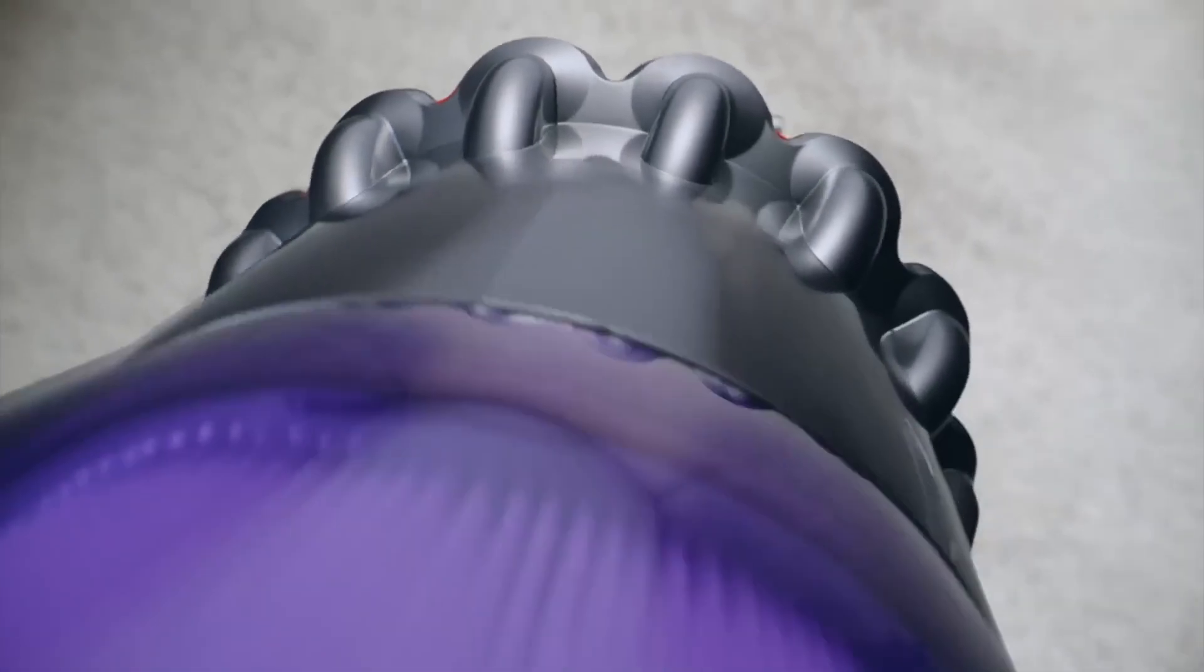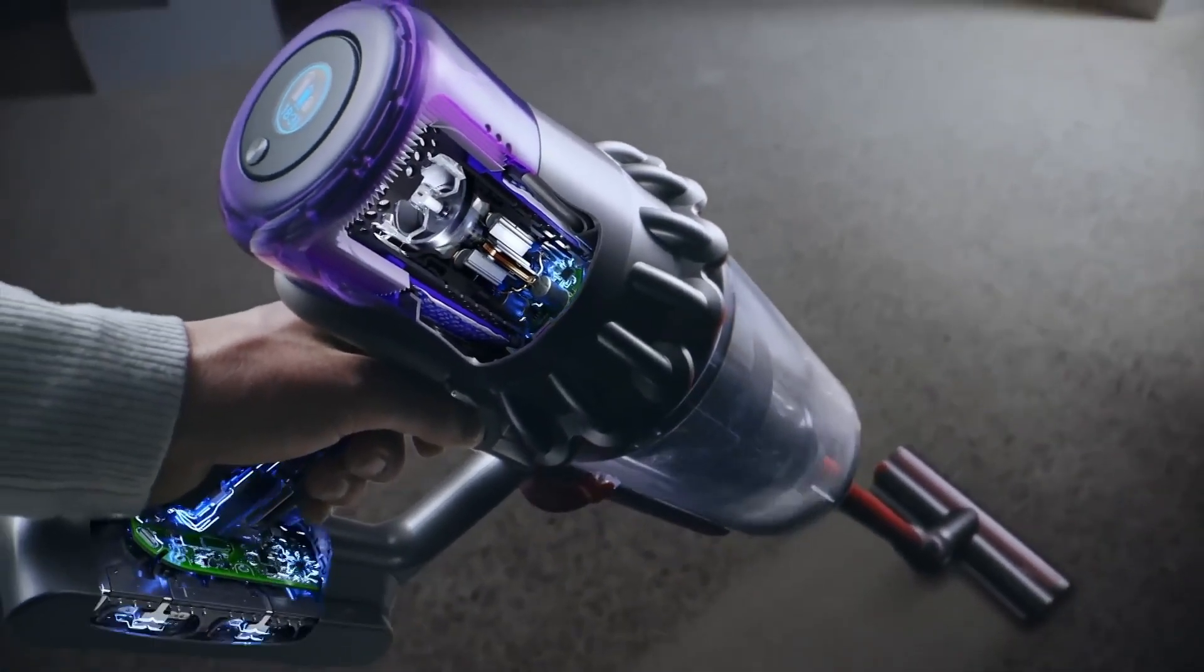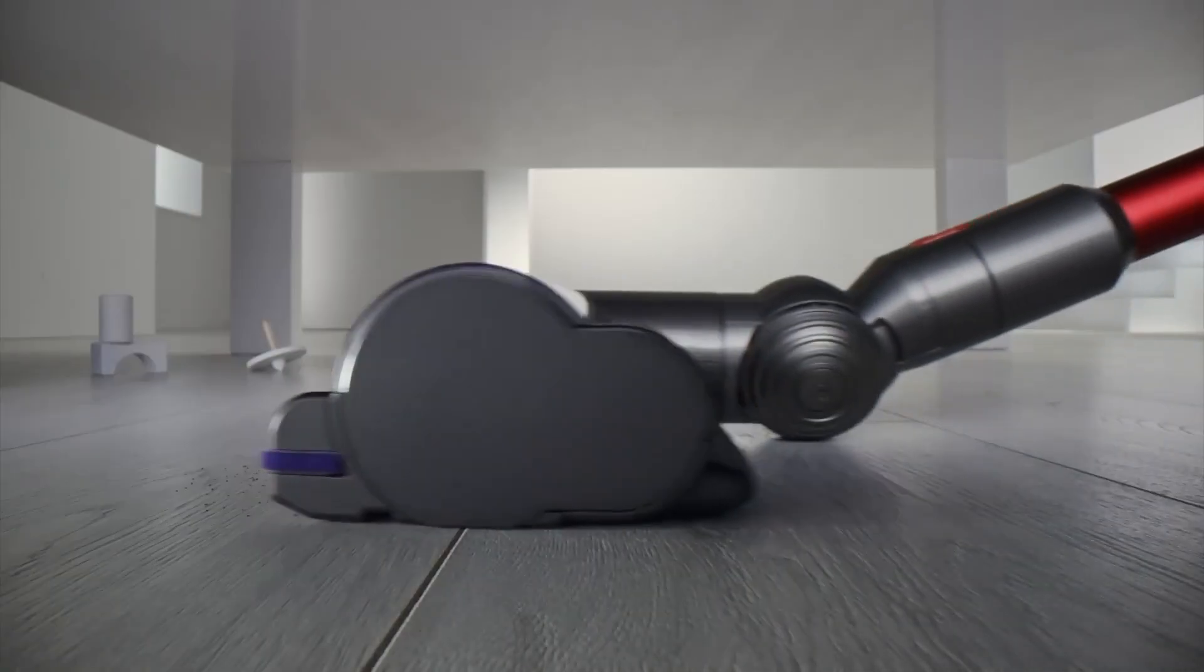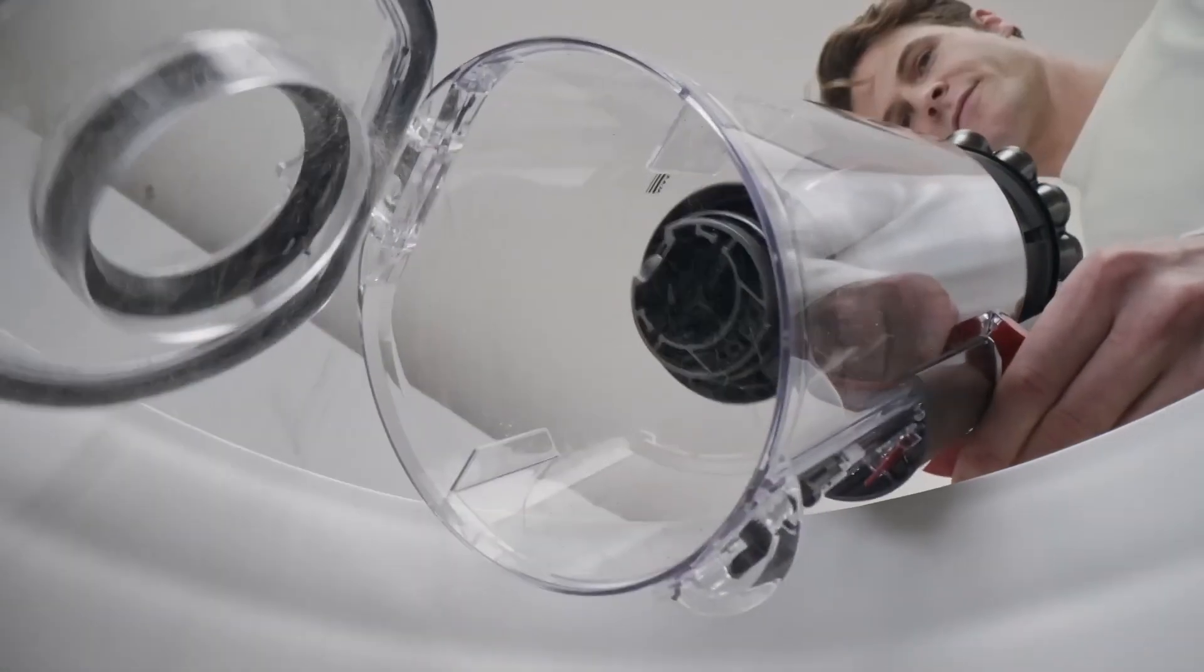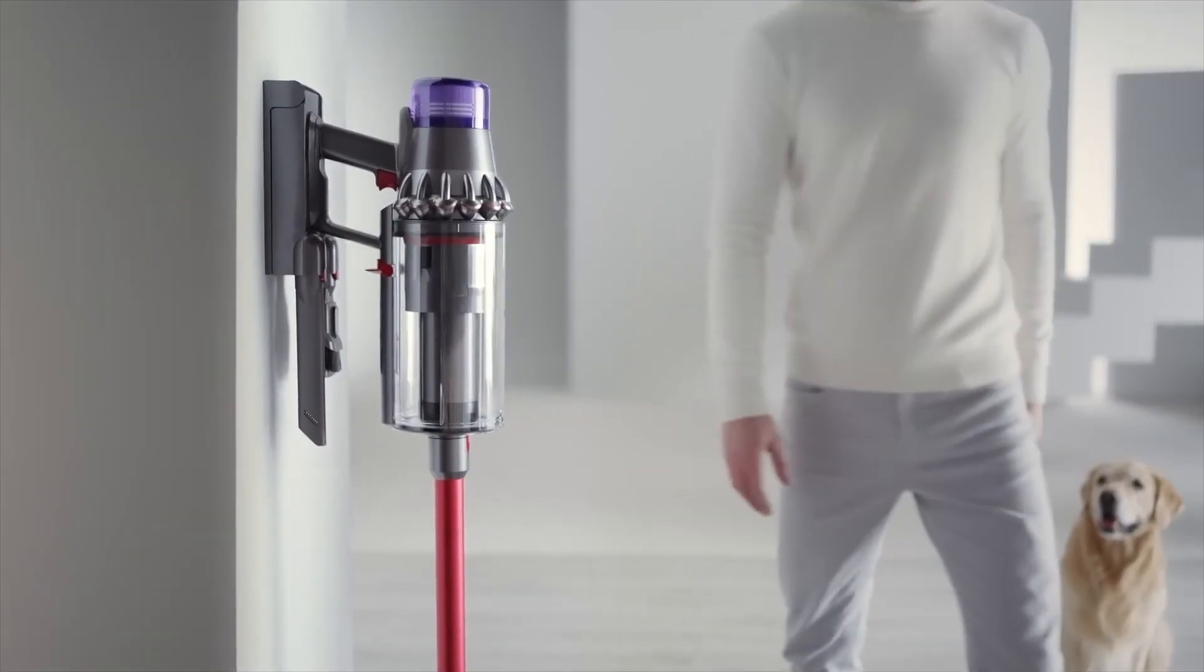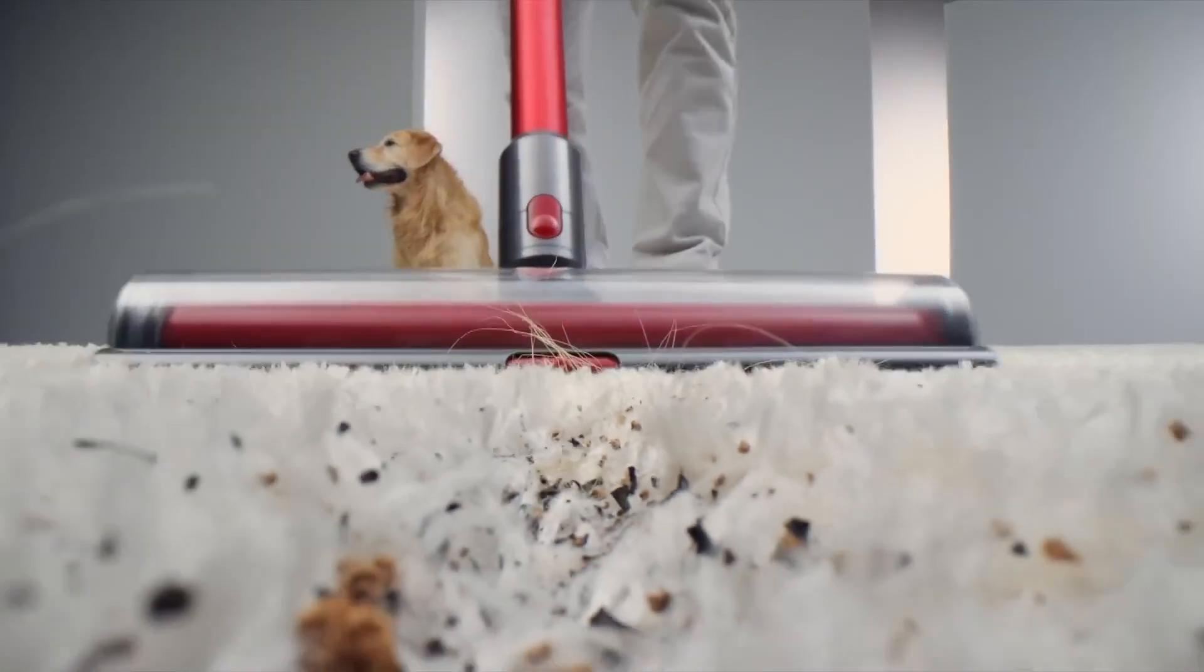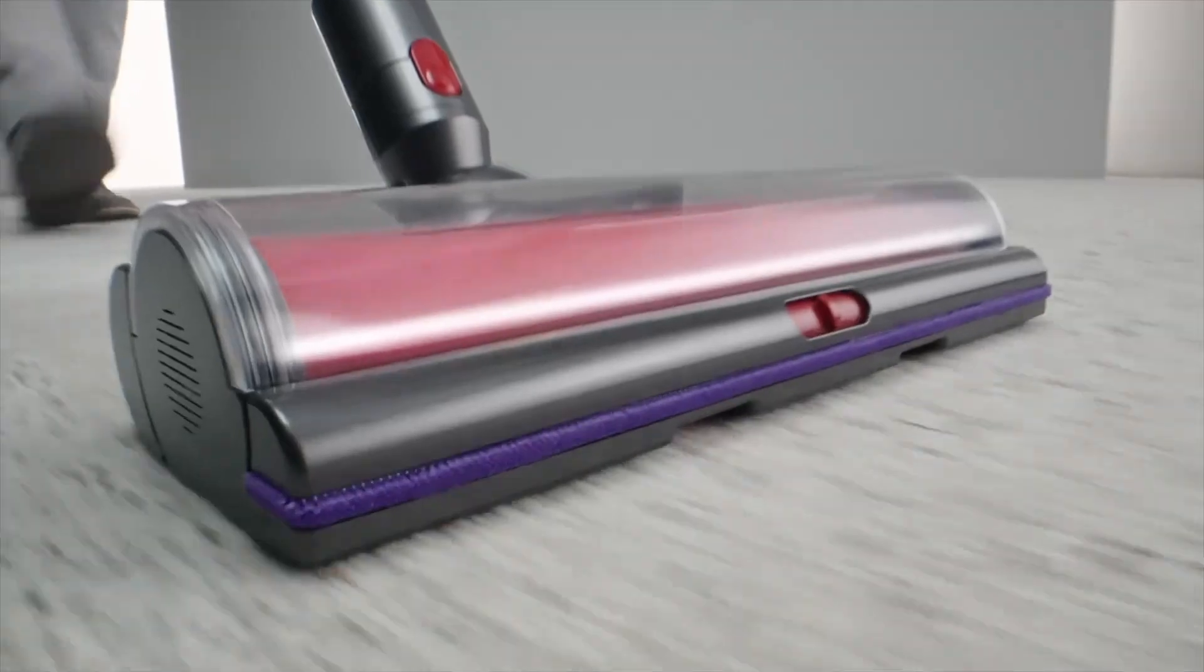One of the most notable features of the Dyson Outsize Plus is its powerful suction capability, which is driven by Dyson's advanced digital motor. The vacuum boasts a suction power of up to 220 air watts, making it one of the strongest cordless vacuums available. This allows for deep cleaning of carpets and hard floors alike, effectively capturing dust and debris. The Outsize Plus is equipped with a 0.5-gallon dustbin, which is larger than many other models on the market, allowing for less frequent emptying and more continuous cleaning time.